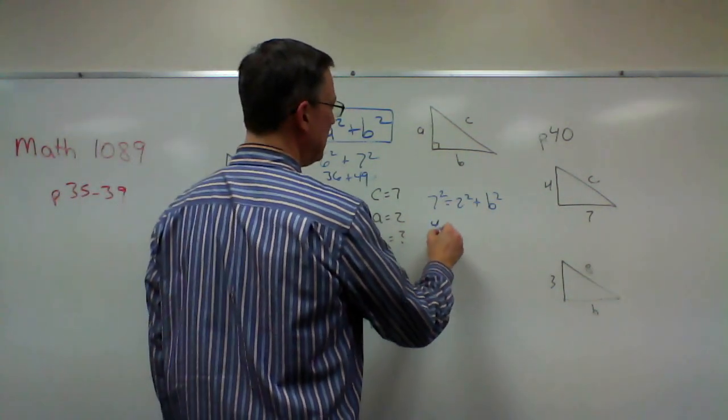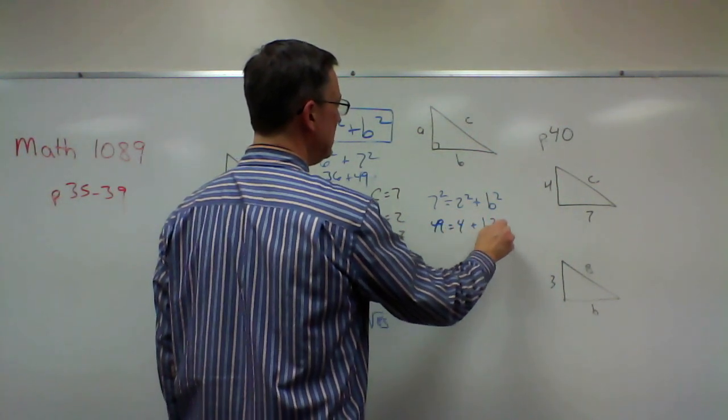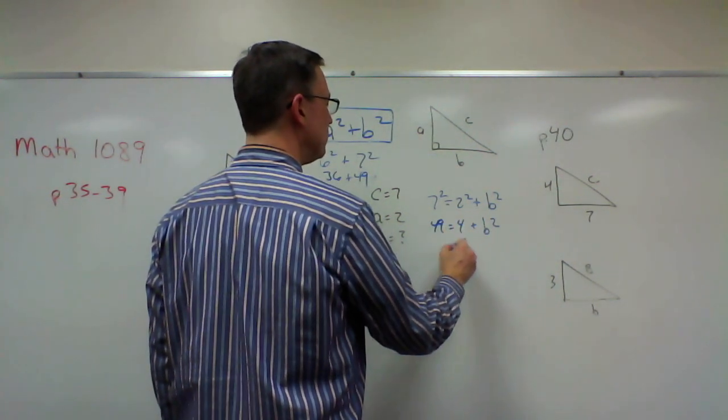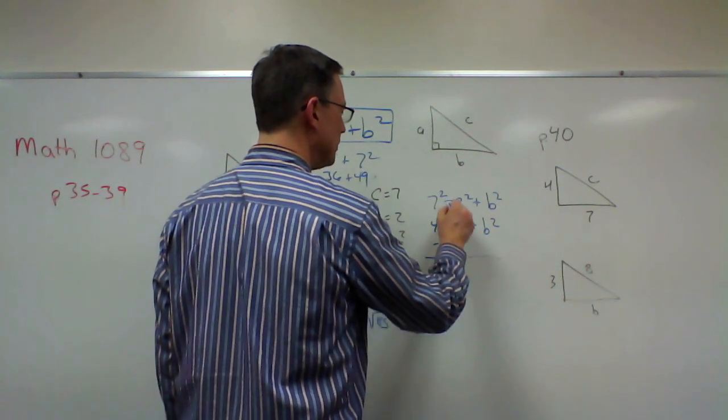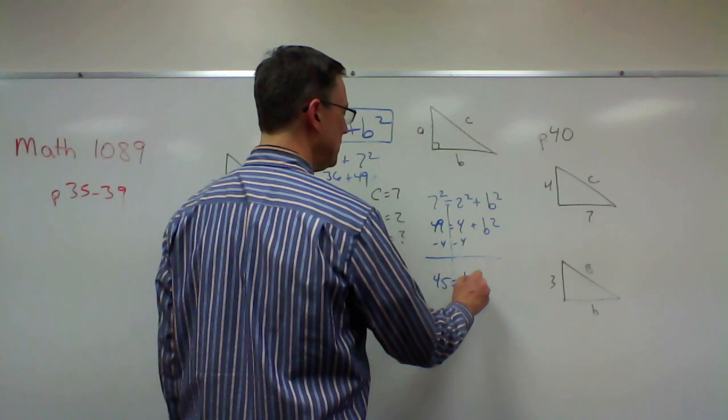So this will give me 49, this will give me 4 plus B squared. And so now I can subtract 4 from both sides, and I get 45 equals B squared.